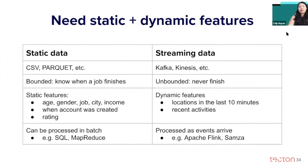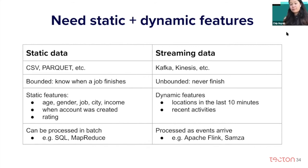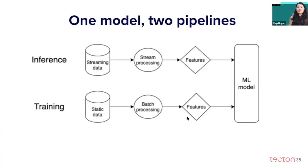To do online predictions, you need both static features and dynamic features. Static features come from static data — you can have data in something like CSV or Parquet format. With static data, you know when a job finishes, but with streaming data you don't know when it finishes — it might never finish. For static data, you process them in batch using something like SQL or MapReduce. For stream data, you want to process them as soon as they arrive, using tools like Apache Flink or Samza. A common pattern is that in academia and industry, you train a model using static data, but do inference on streaming data — so you end up with two different pipelines.